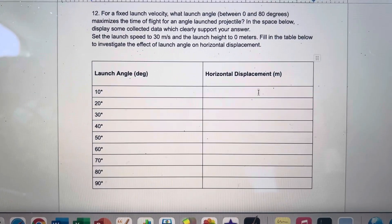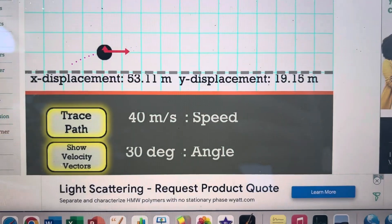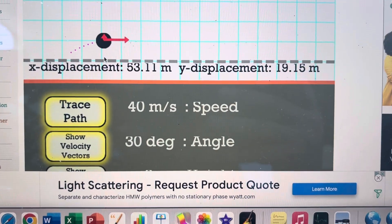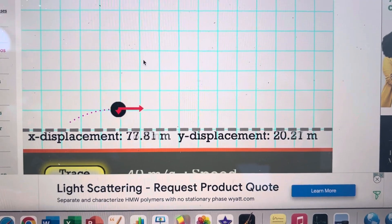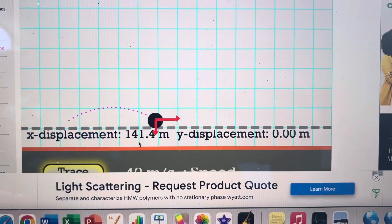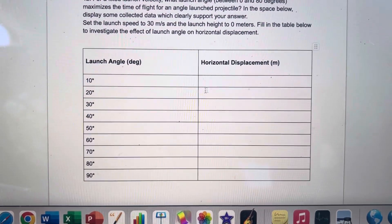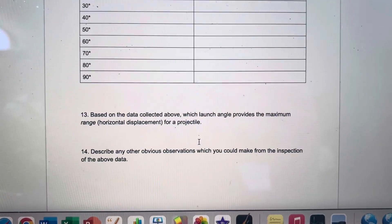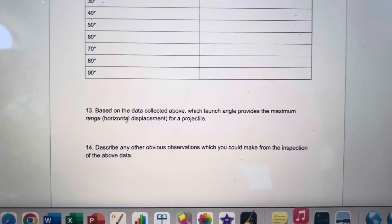You're going to fill in this data table and write down the displacement. The horizontal displacement is right down here where it says x displacement. When I launch this, it reads off and gets me a total - that's what you're going to write down in your table. You also want to see which one gets you the furthest range.